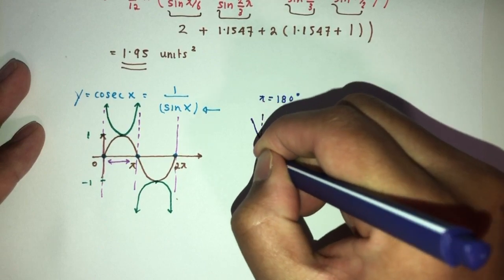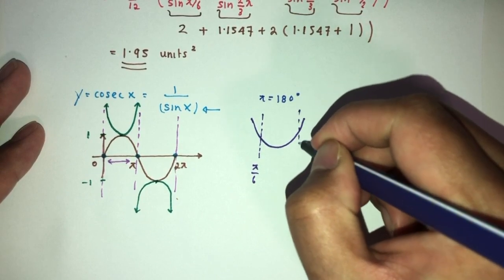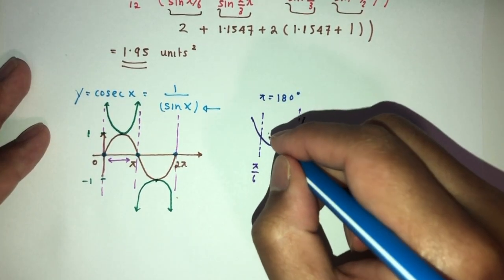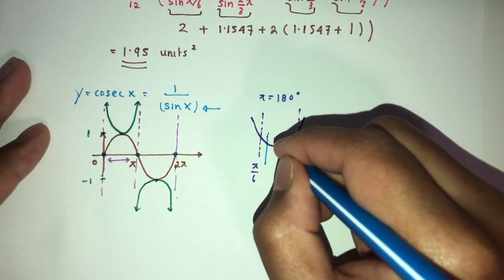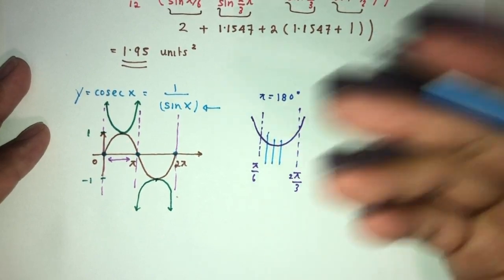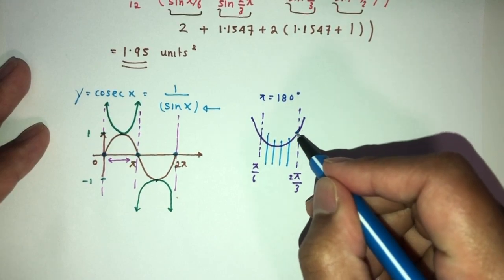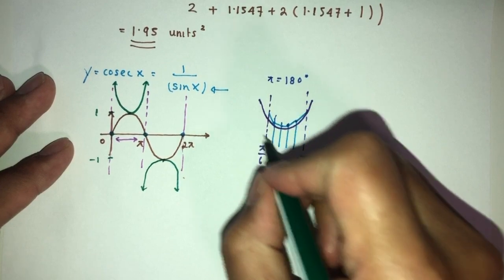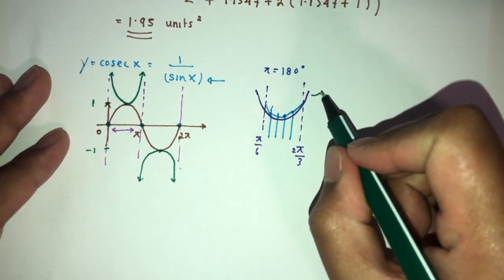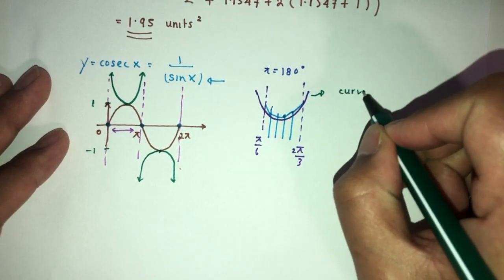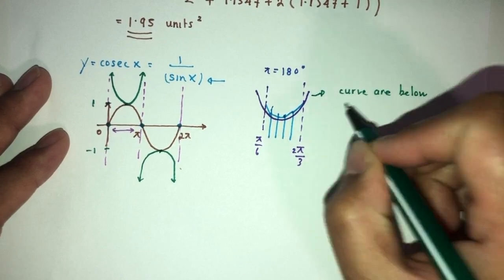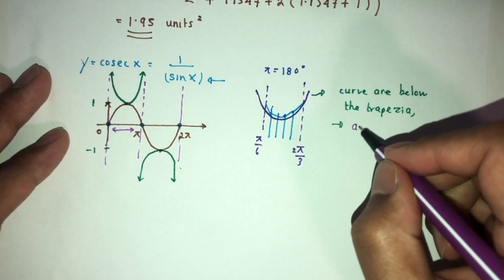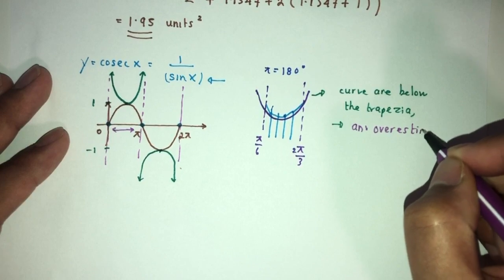In this case, from what we can see, the graph was in this shape. In this region, the limit is π/6 to 2π/3. By construction you can see clearly the curve will go below the trapezium. As you observe, if I were to draw the trapeziums in this kind of curve, the curves are below the trapezium. This is why it will be an overestimate.